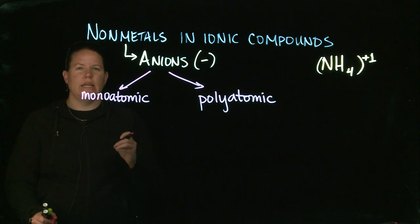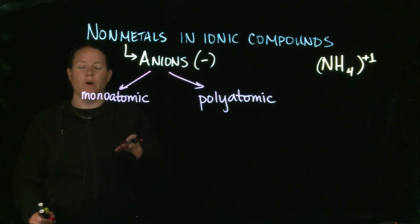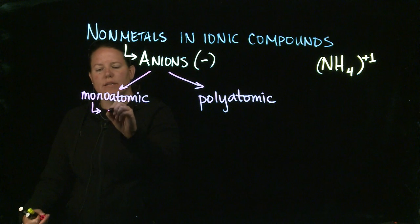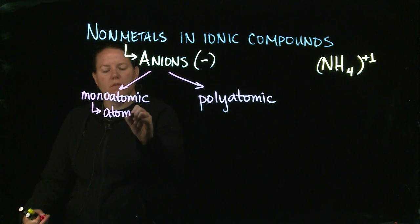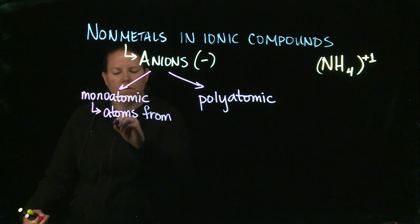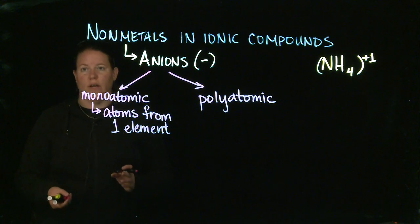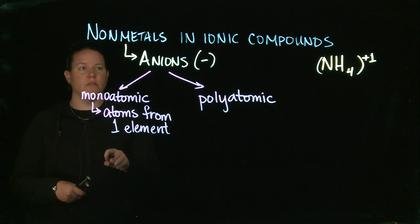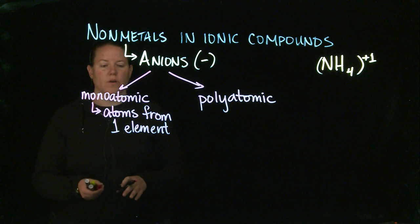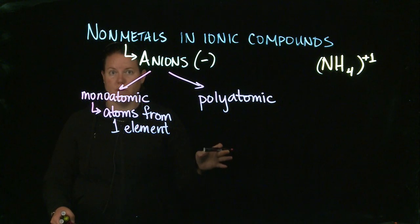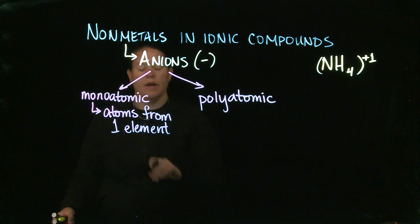The problem with that is that's not exactly true. A lot of people think of literally one atom. What this means more is that it's atoms from one element. Atoms that have formed a charge by exchanging electrons, either gaining or losing them. In this case, since it's an anion, we're exclusively gaining electrons from another element and forming a charge. Thus, those atoms become charged atoms, which is actually the definition of an ion.